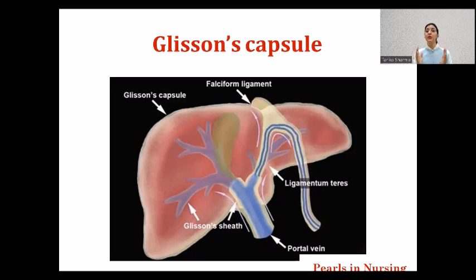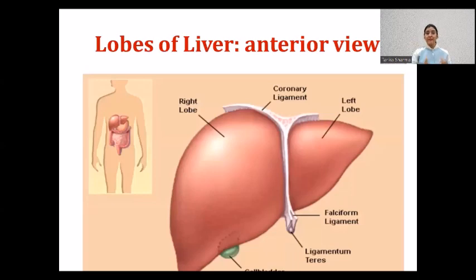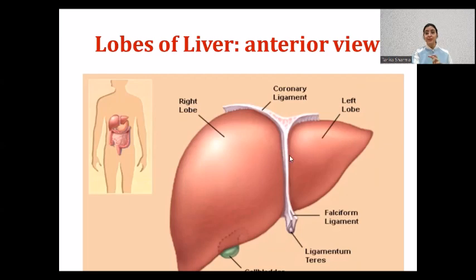The next important part is the lobes and segmentation of the liver. The liver has four lobes and eight segments. From the anterior view, when we visualize the body from the front, we can see two lobes: the right lobe and the left lobe. As you can see from the image, the right lobe is bigger compared to the left lobe, and this division is made possible by the falciform ligament.